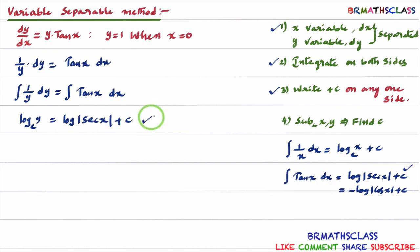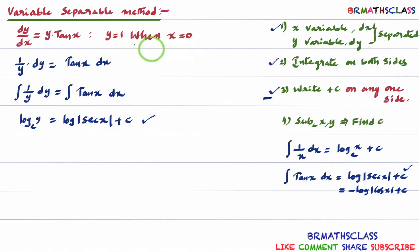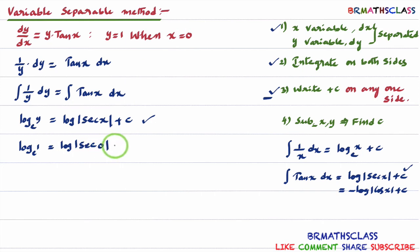I have now calculated the general solution of the given differential equation. Up to step 3 is over. But in this question, they are asking to find the particular solution. To find the particular solution, first we calculate the general solution. Then in the general solution, substitute the given x value and y value to find the value of c. Now I'll substitute y equal to 1 and x equal to 0 in this general solution. In place of y, I write log 1, and in place of x, secant 0.